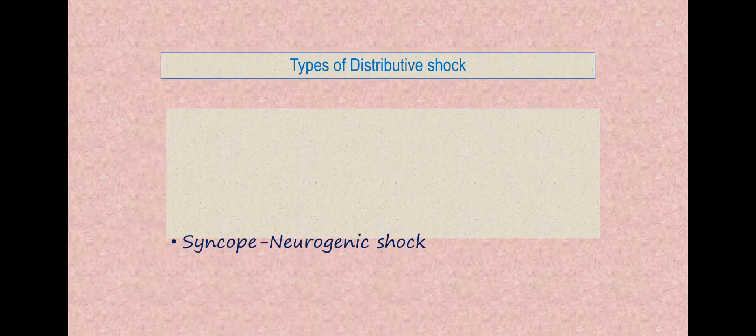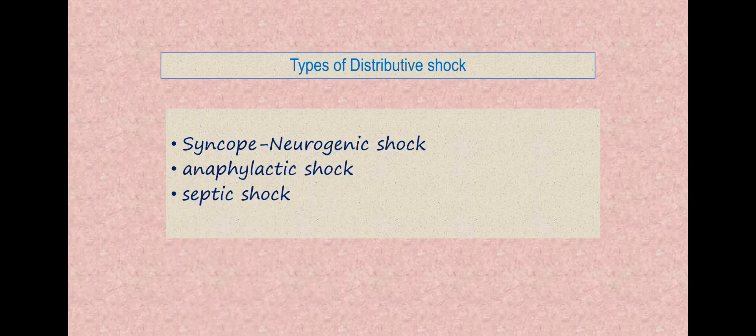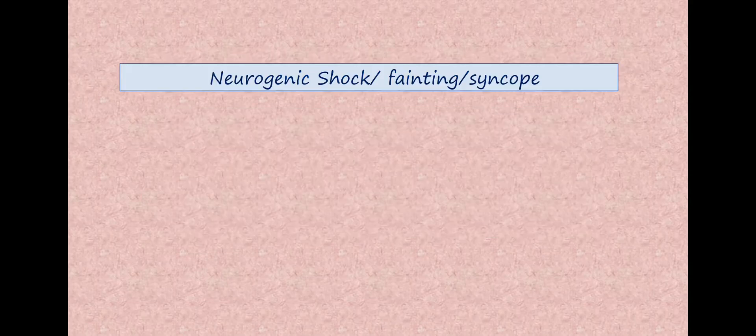Now types of distributive shock. It can be syncope. Syncope means reduction in the cerebral blood flow and the person suddenly faints. This one is known as neurogenic shock. Then we have anaphylactic shock because of antigen-antibody reaction, or we have septic shock because of infection by various microorganisms. So we'll discuss them one by one.